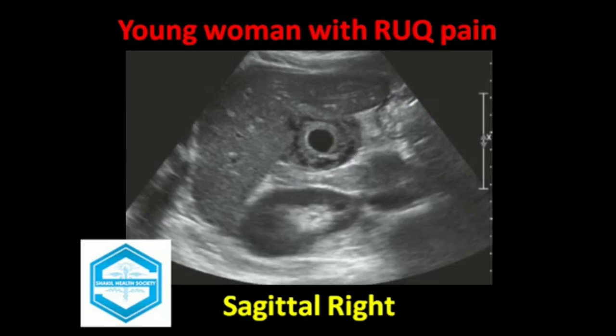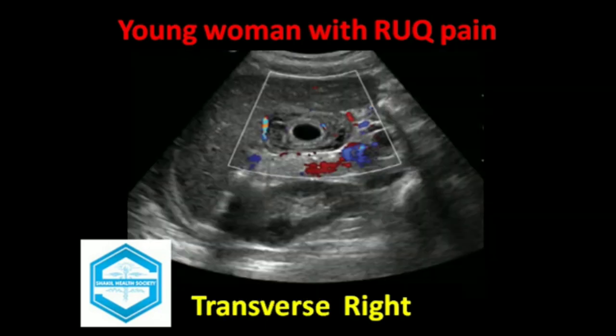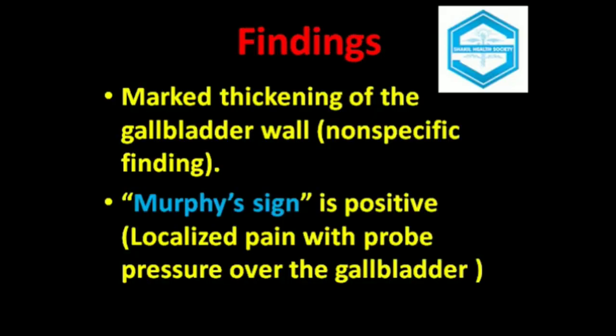By application of color Doppler, there is a little bit of increased vascularity, especially in the periphery surrounding the edematous gallbladder. The findings of these images show marked thickening of the gallbladder wall.